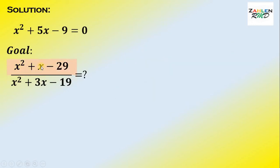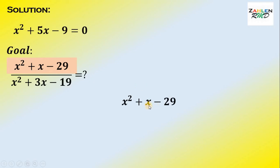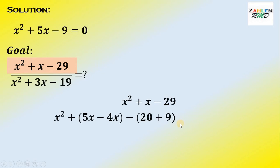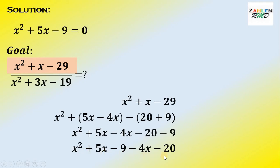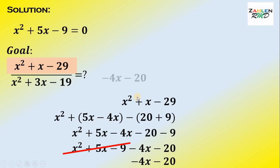First, focus on the numerator: x squared plus x minus 29. We rewrite it by expressing x as 5x minus 4x, and 29 as 20 plus 9. Distributing the negative sign gives x squared plus 5x minus 4x minus 20 minus 9. Rearranging: x squared plus 5x minus 9, minus 4x minus 20. Since x squared plus 5x minus 9 equals 0, that term cancels, leaving the numerator equal to negative 4x minus 20.